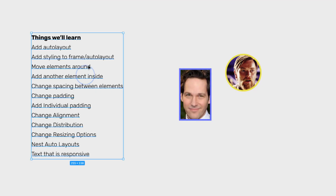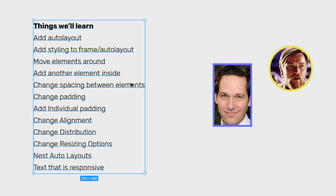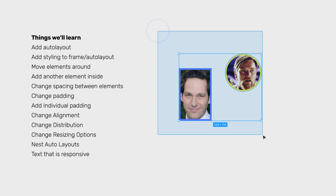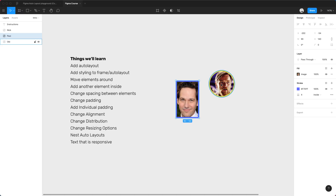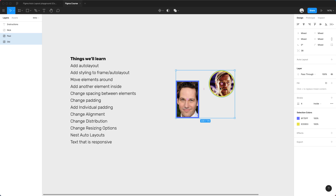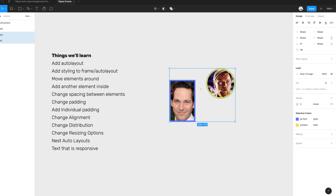Here are the things we're going to be learning in this introduction to Auto Layout. To keep things simple, I'm going to start by using some simple shapes — we'll get into more complex real examples in other video lessons. So the first thing is just adding Auto Layout. You add more than one object. For example, here I select these two objects.